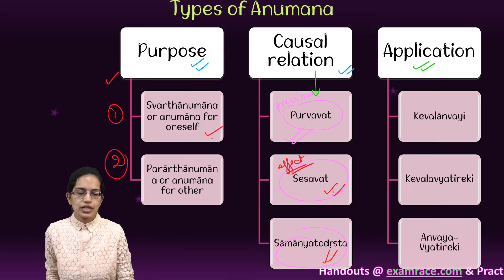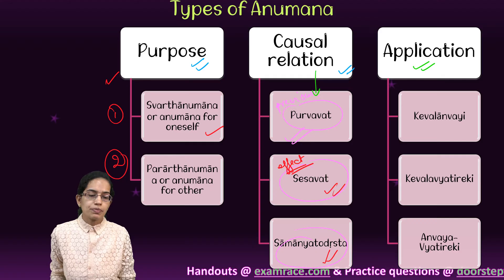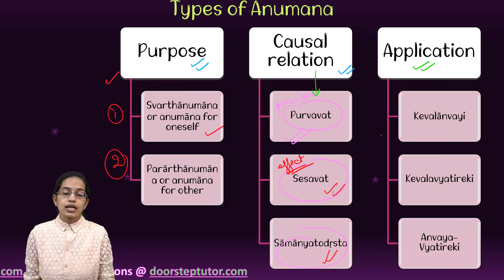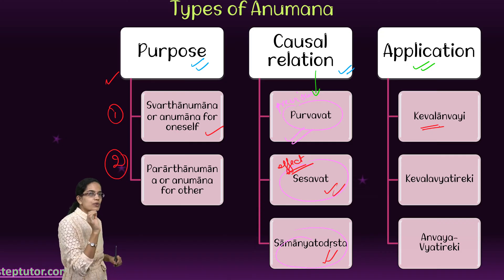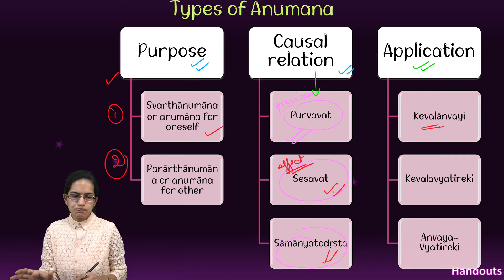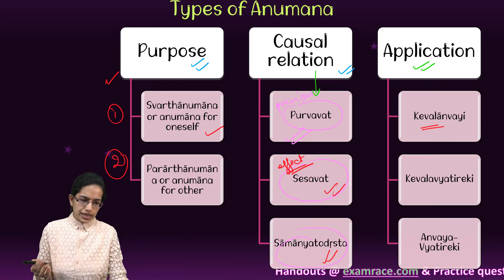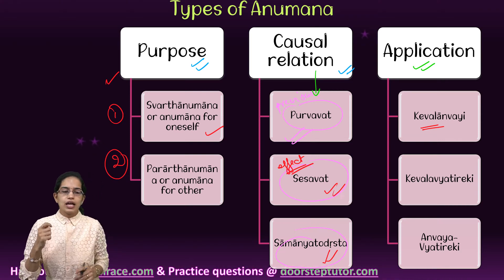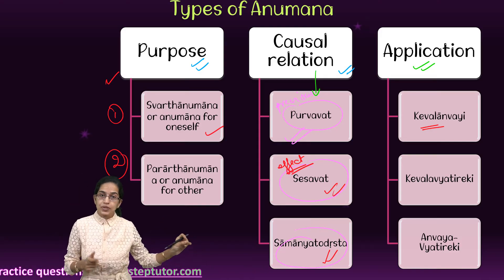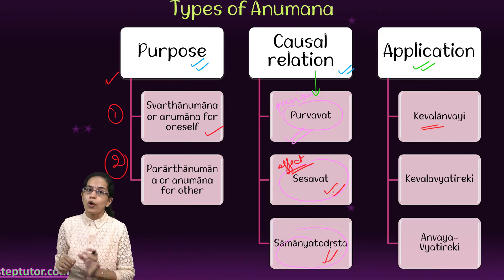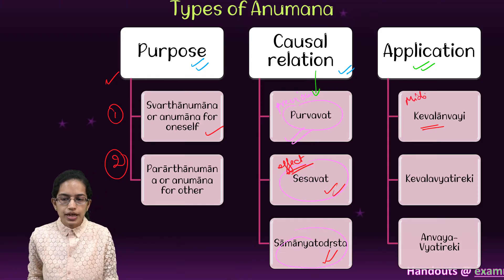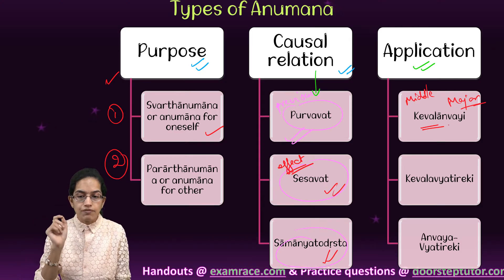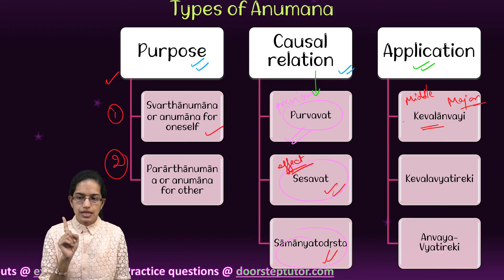The next classification is based on application. The first type is kevalianvy, where we create a relation between the middle term and the major term. For example: all knowable objects are nameable; a pot is a knowable object; therefore a pot is nameable. This creates a positive relation between middle and major term, and that is known as kevalianvy.